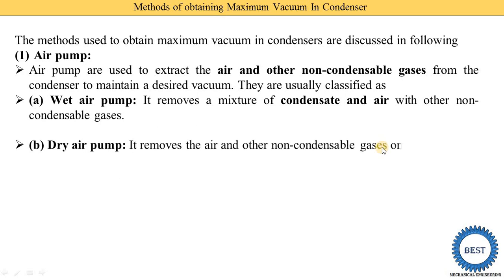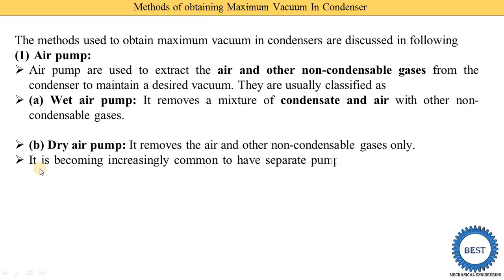The second type is the dry air pump. The dry air pump only removes the air and other non-condensable gases — no condensate is removed. It is becoming increasingly common to have separate pumps for extracting the air and the water from the condensate. A separate pump is used to remove the air, called the air extraction pump, and a separate pump to remove the condensate, called the condensate extraction pump.